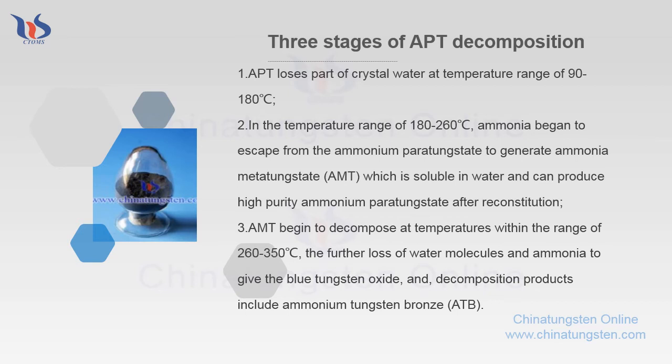Stage 3: AMT begins to decompose at temperatures within the range of 260 to 350 degrees Celsius, with further loss of water molecules and ammonia to give Blue Tungsten Oxide. Decomposition products also include Ammonium Tungsten Bronze.